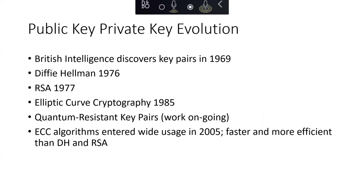Public key cryptography dates back a number of years. The first public announcement was by Diffie-Hellman in 1976, but actually seven years before that, British intelligence had discovered key pairs, though they took a couple of decades before publicly revealing it. In 1977, the RSA algorithm came along making use of public key/private key. Elliptic curve cryptography, which Bitcoin uses, came along in 1985, and there is currently ongoing work on quantum-resistant key pairs. Elliptic curve cryptography algorithms entered wide usage in 2005, primarily because they were faster and more efficient than Diffie-Hellman and RSA.